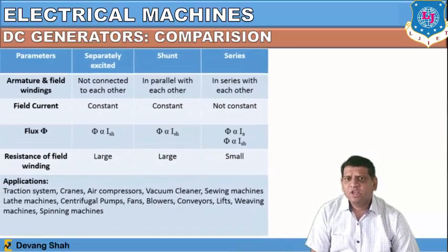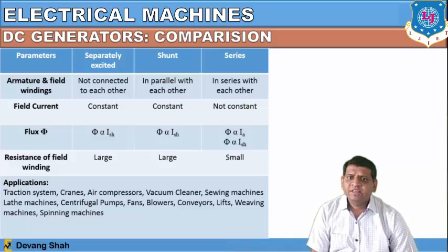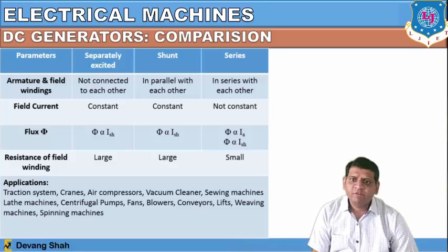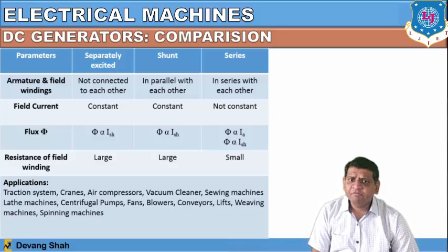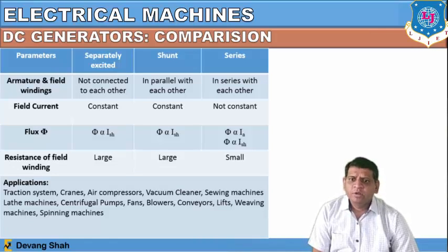Comparing separately excited, shunt, and series DC generators: in a separately excited generator, the armature and field windings are not connected to each other; in shunt they are in parallel; and in series they are in series. Field current is constant in separately excited and shunt generators but not in series. Flux is proportional to the shunt current in both separately excited and shunt cases, but in series it is proportional to the armature current. The field winding resistance is very large for separately excited and shunt generators but very small for series generators.